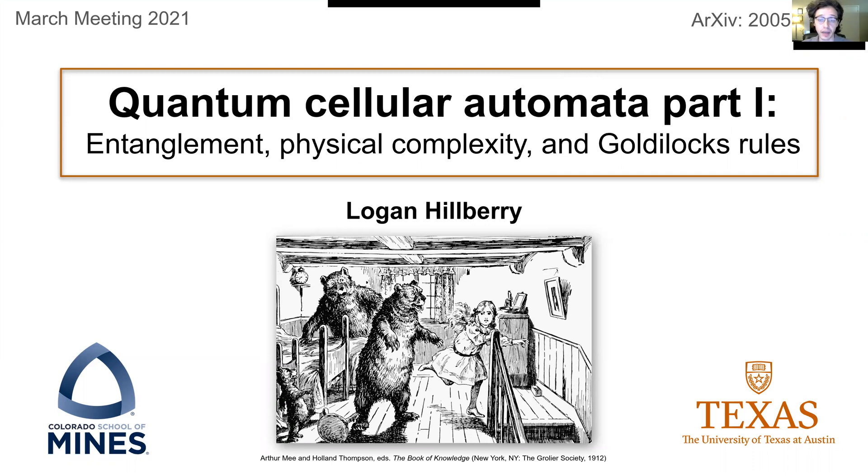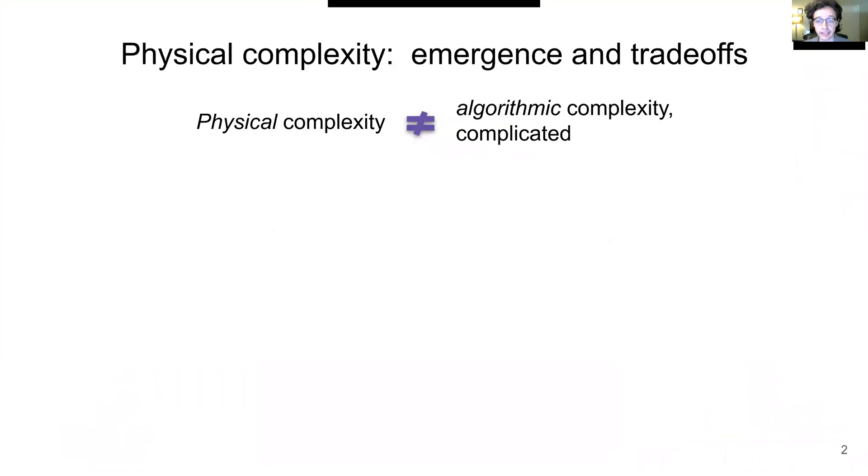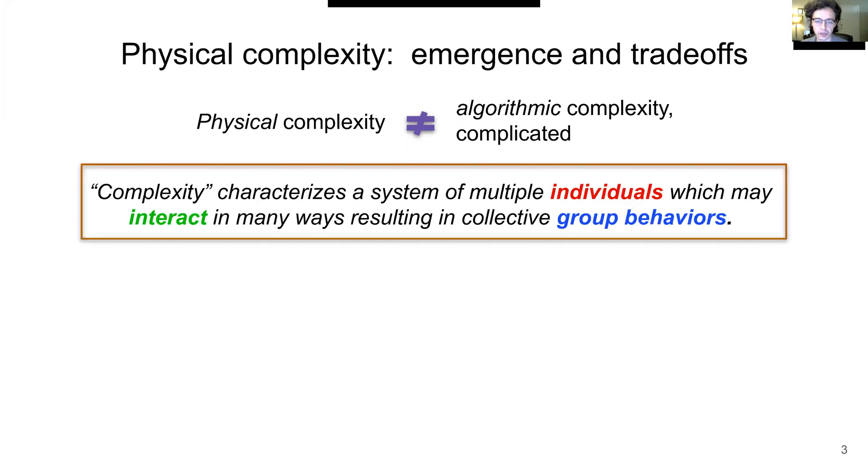To start, I would like to talk about complexity. When I say complexity, I'm referring to physical complexity. I'm not referring to algorithmic complexity, which is the study of how many steps are required to complete some algorithm, nor am I referring to just some complicated system. The physical complexity which I am referring to doesn't exactly have a universally agreed-upon definition, but I'll do my best to give you one sentence. Complexity characterizes a system of multiple individuals which may interact in many ways, resulting in collective group behaviors.